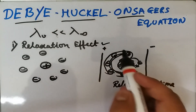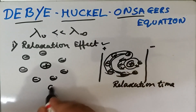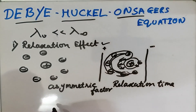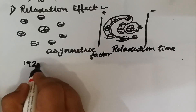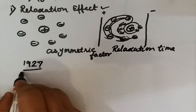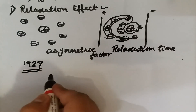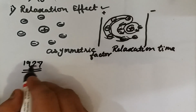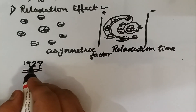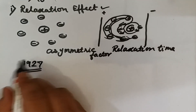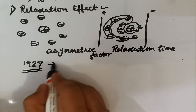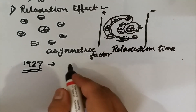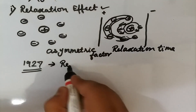The time lag between the disappearance of the old ionic atmosphere and the formation of the new ionic atmosphere is known as relaxation time. Because of this relaxation time, when an ion is under the influence of an external electrical field, the amount of oppositely charged ions on the rear side is greater. As a result, these oppositely charged ions drag back the positively charged ion, reducing its mobility. This effect is known as the relaxation effect, or asymmetric factor.